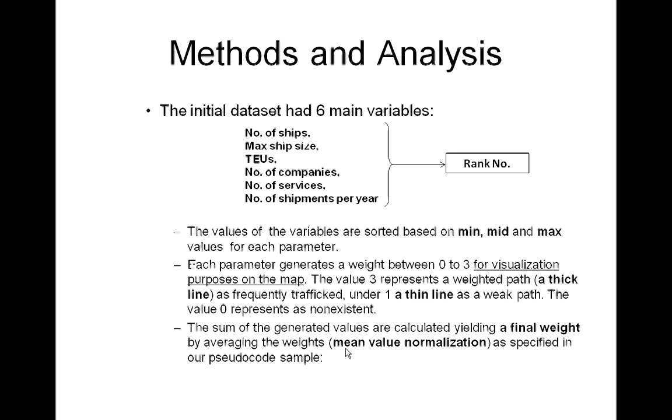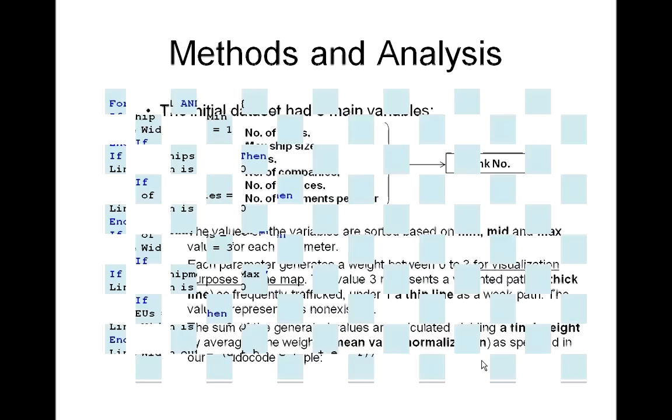The value 0 represents a non-existent path. The sum of the generated values are calculated, yielding a final weight by averaging the weights — the mean value normalization — as specified in our pseudocode example.